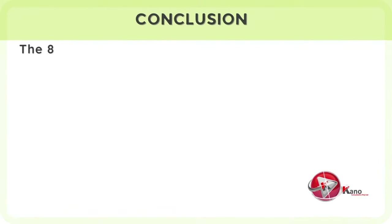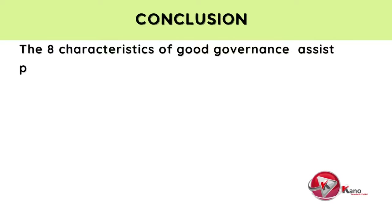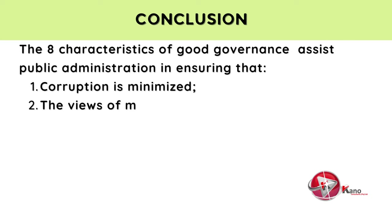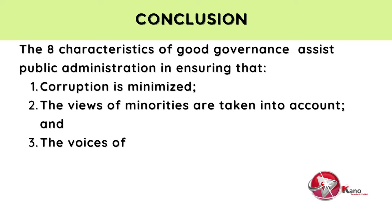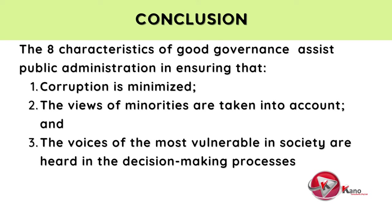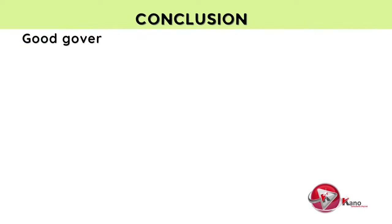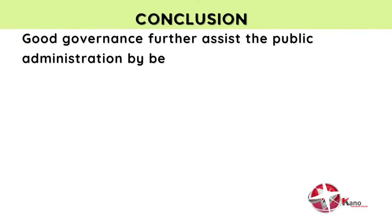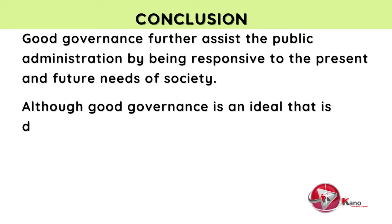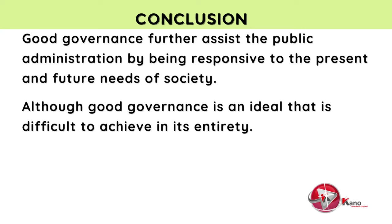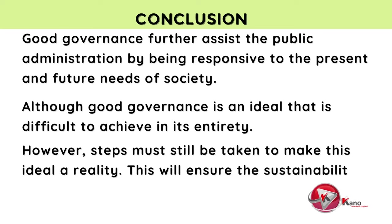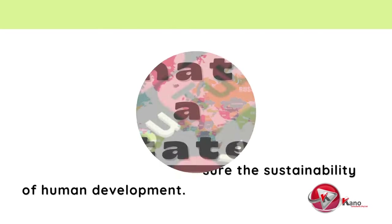In conclusion, the eight characteristics of good governance assist public administration in ensuring that: one, corruption is minimized; two, the views of minorities are taken into account; and three, the voices of the most vulnerable in society are heard in the decision-making processes of government. Good governance further assists public administration by being responsive to the present and future needs of society. Although good governance is an ideal that is difficult to achieve in its entirety, steps must still be taken to make this ideal a reality, which will ensure the sustainability of human development.